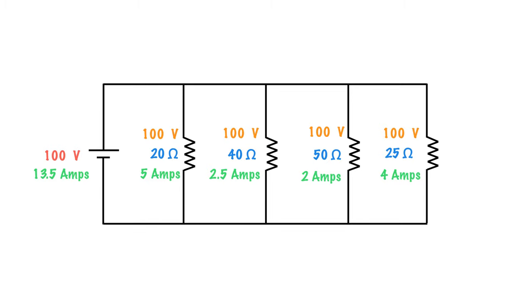Now to calculate our total resistance in this circuit, we have each individual branch, but to get our total circuit resistance, the easiest way is using Ohm's law. 100 volts divided by 13.5 amps gives us our total resistance, which is 7.4 ohms. That's fairly easy to calculate, but there's another way to do it as well.